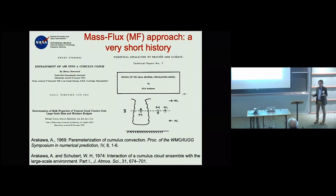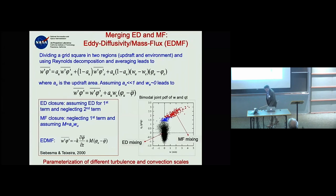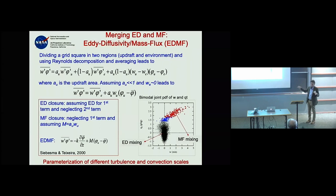In practice, you divide your grid box into an updraft area going up and the remaining environment coming down. Then with Reynolds decomposition and averaging, your turbulent flux ends up being three terms: turbulence inside the updraft plumes, turbulence in the environment, and exchange of properties between plumes and environment.